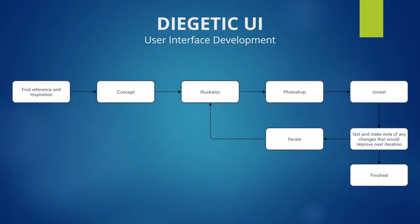This graphic represents the process I go through when designing a diegetic element for my user interface. I start by finding reference and making a concept quickly, then go into Illustrator to make the vectors, rasterize them in Photoshop, bring those into Unreal as early as possible. Then I take notes of anything that works, doesn't work, or needs to change, and iterate — going all the way back as far as necessary and repeating the process until I have a finished product.